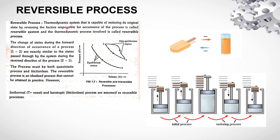A reversible process is called a reversible process. The reversible process is an idealized process that cannot be attained in practice.